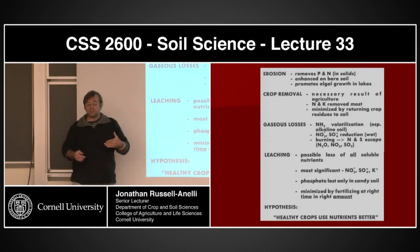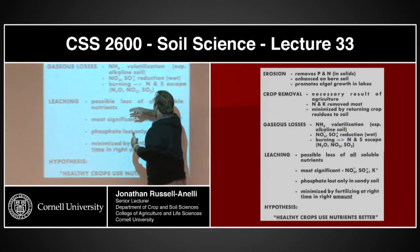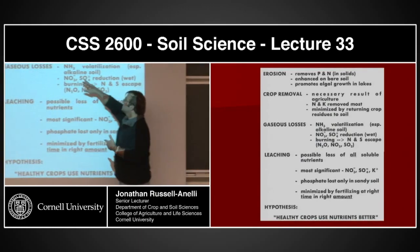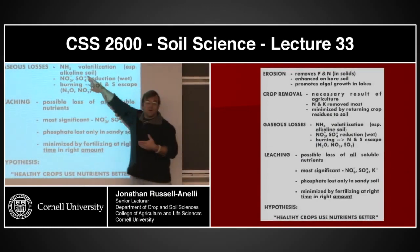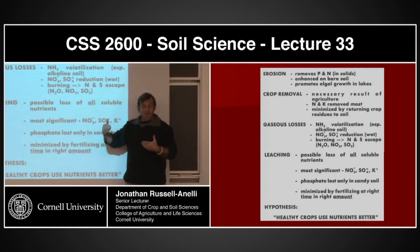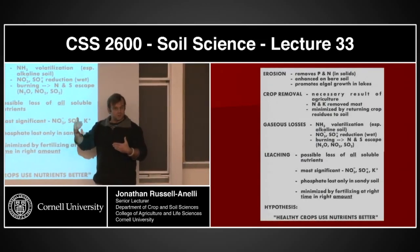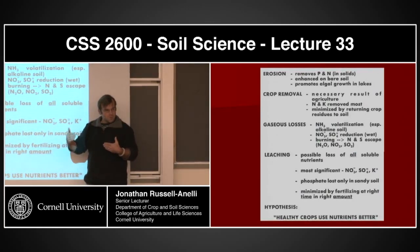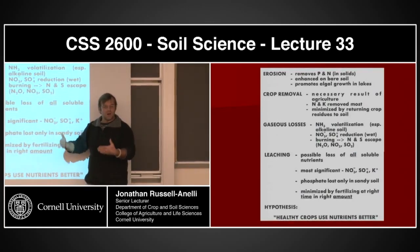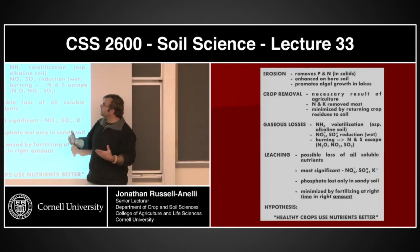Gaseous loss has to do with the nitrogen cycle predominantly, but it can also involve sulfur. Basically, when you're looking at ammonification — once that amine group from the crop residue or organic matter decomposes and it's put into ammonia — ammonia is a gas, so it can literally volatilize from the system. Certainly, when you burn stuff, you're going to have volatilization as well.